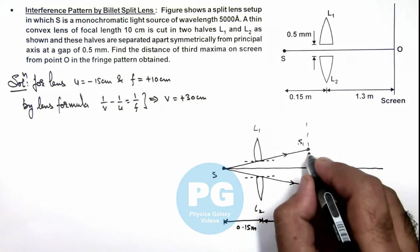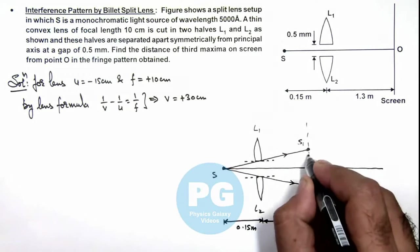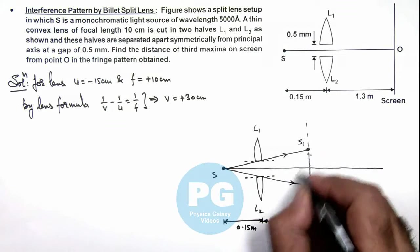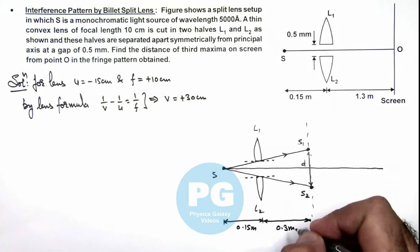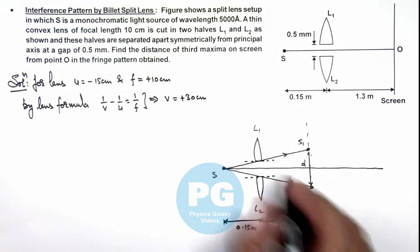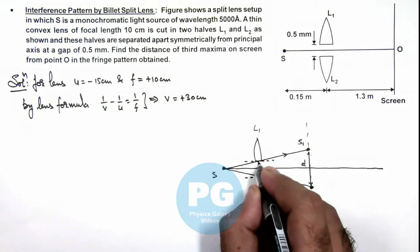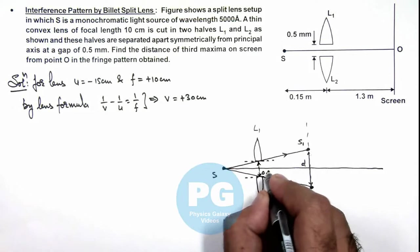As the separation between images we will need for analyzing interference pattern, if it is taken as d, then in this triangle as this separation we are already given as 0.5 mm.